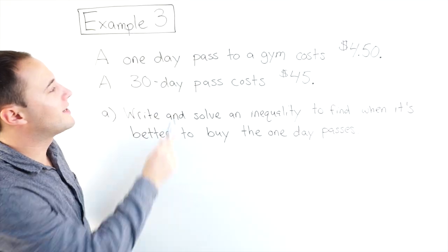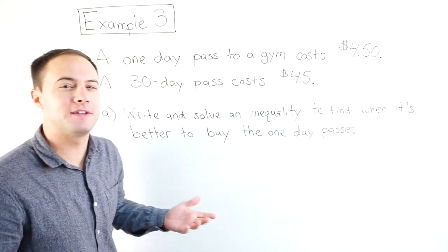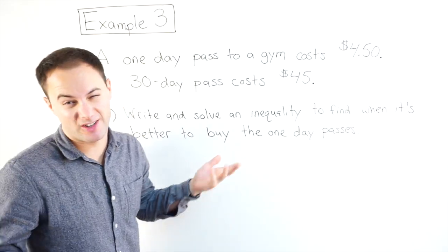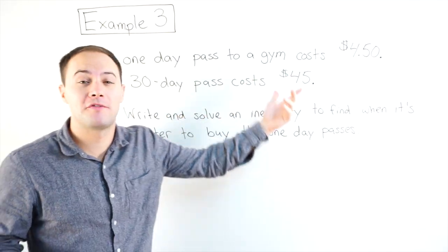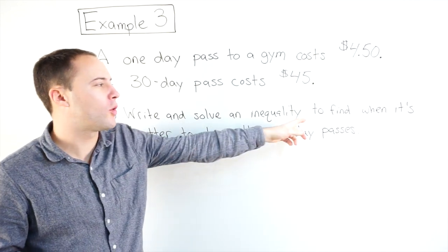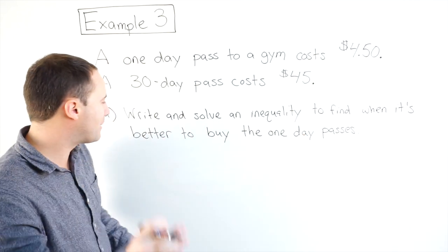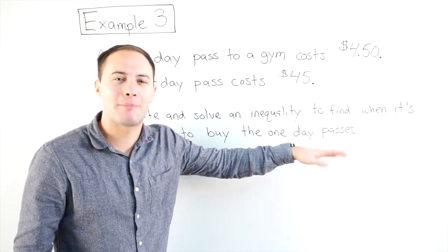Alright, example 3. A one day pass to a gym costs $4.50. A 30 day pass, or like a month long pass, costs $45. So part A, write and solve an inequality to find when it's better to buy the one day passes, instead of buying the full month long 30 day pass.